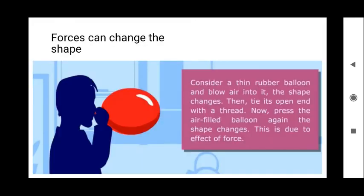First, how can force bring about a change in an object's shape? Let us do a simple activity. Consider a thin rubber balloon and blow air into it — the shape changes. Now, after blowing the balloon, tie its open end with a thread, then press this air-filled balloon again. The balloon changes its shape. This is due to the effect of force, and we clearly understand that force can change the shape of an object.